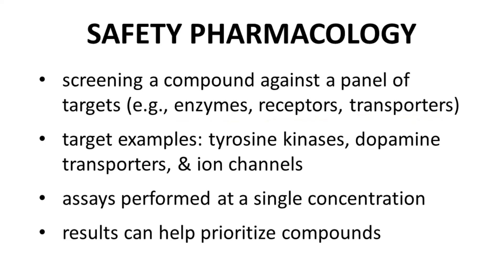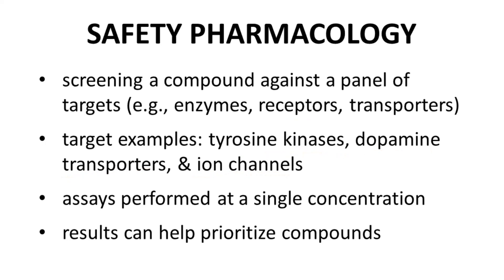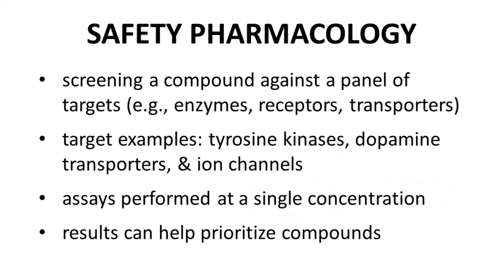Examples of targets in a safety panel include tyrosine kinases, dopamine transporters, ion channels, and adrenergic receptors. The assay normally measures target binding or percent inhibition of the test compound at a single concentration, often 10 micromolar. Compounds with 50% or higher binding or inhibition are considered significant concerns.